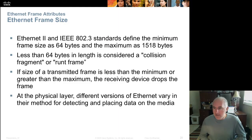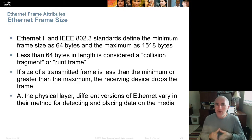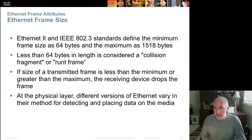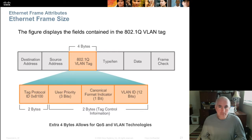There is a minimum and maximum frame size. The minimum is 64 bytes — you can't send a frame smaller than that. If you don't have enough data, you add padding of meaningless ones and zeros. A frame smaller than 64 bytes is illegal, thrown away, and called a runt. The maximum Ethernet frame used to be 1518 bytes, but that's been raised to 1522 bytes.